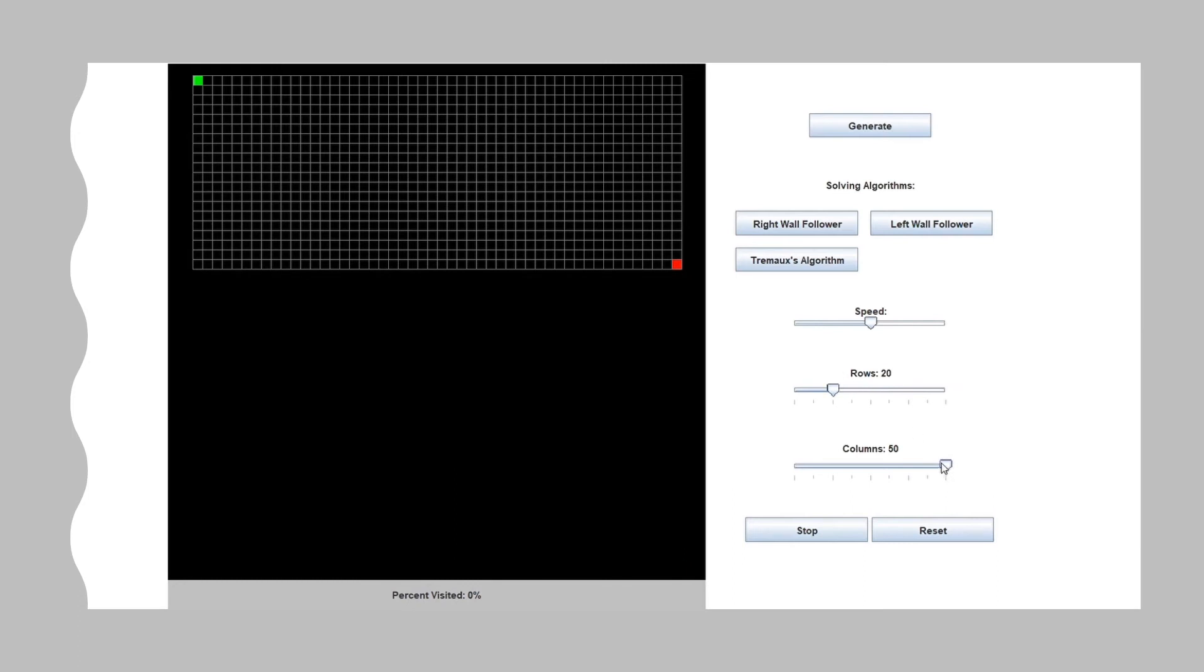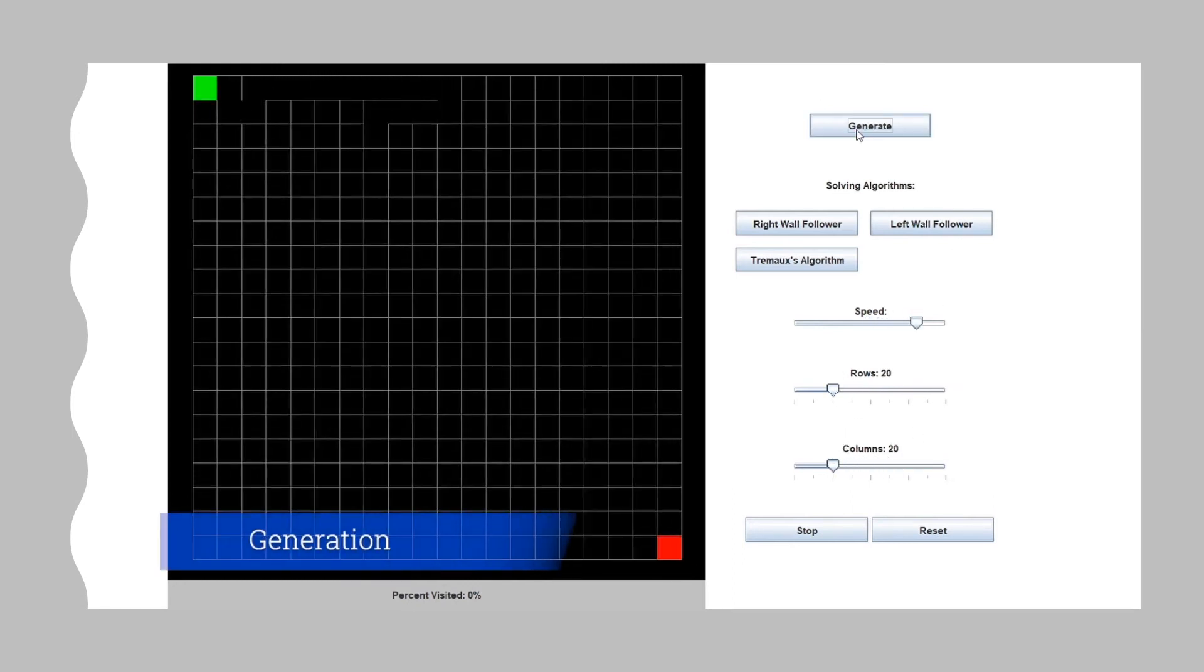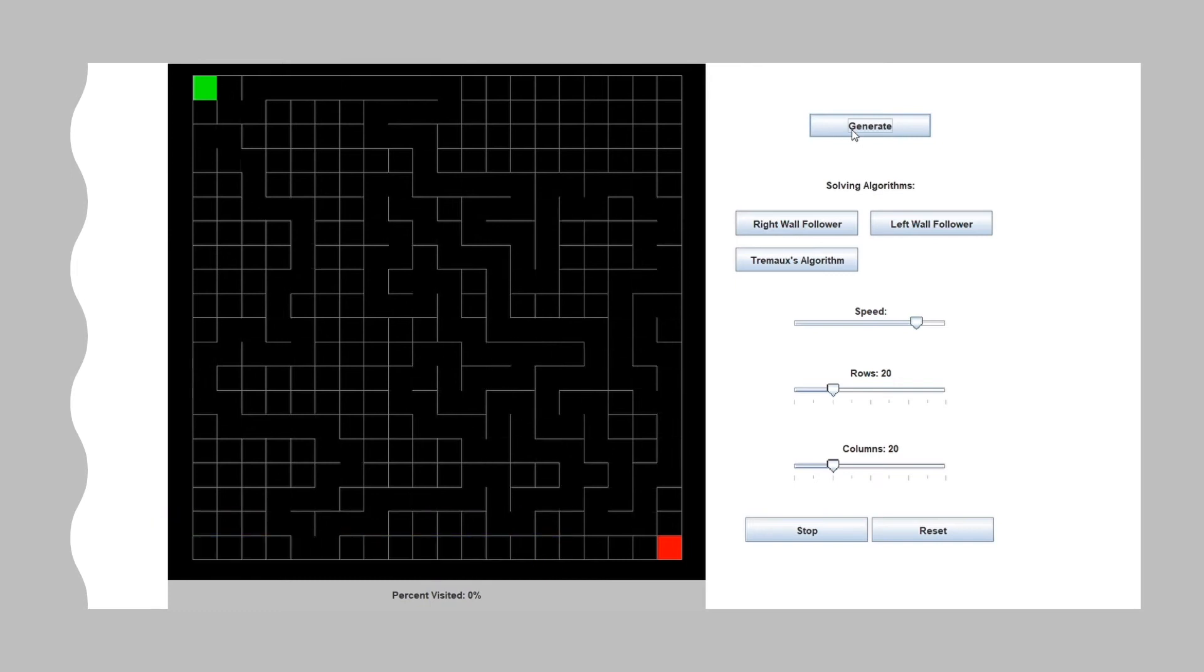Now we get to watch a demo of my project. Here at the beginning you can see me adjust the size and speed of the maze before starting the generation process. The lines of the maze start out gray and then turn white when it is completed.